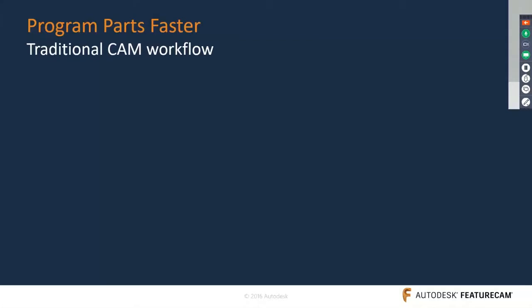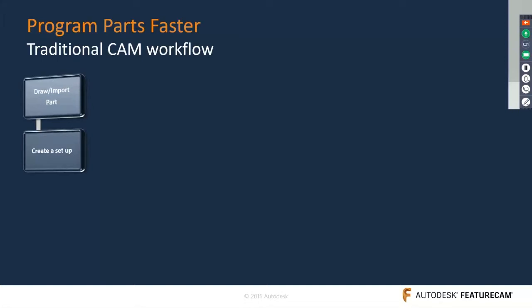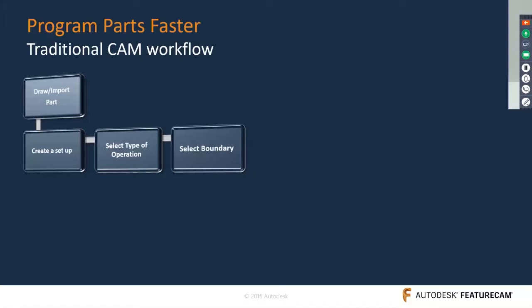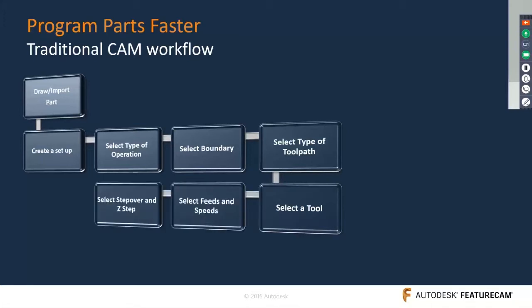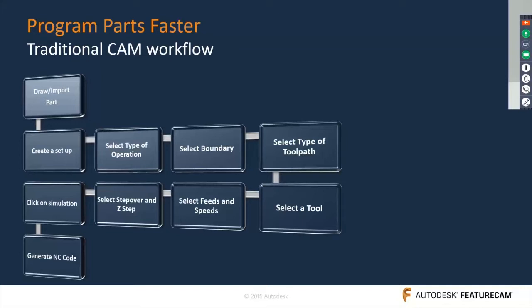In traditional software, to make a program you have to draw or import the part, create the setup, select the operation, select the boundary, select the type of toolpath, select the cutting tool, select feeds, step-over or step-down. Then you do the simulation and generate the NC code — many manual steps are required.